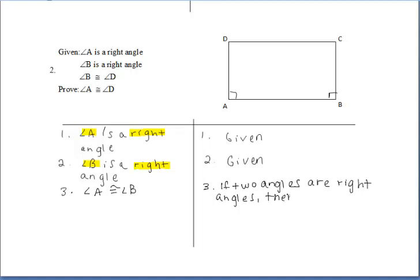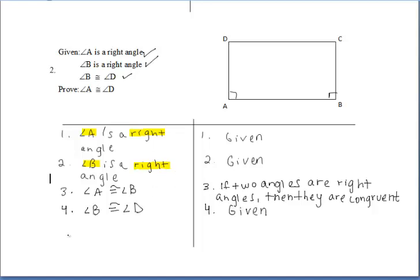We want to prove that angle A is congruent to angle D. We've used two of our givens so far. We still haven't mentioned that angle B is congruent to angle D, so let's write that in — angle B is congruent to angle D, because it's given. Now it says angle A is congruent to angle B, angle B is congruent to angle D, and we want to prove angle A congruent to angle D. Both angles A and D are congruent to the same angle B, so we can say angle A is congruent to angle D by the transitive property.